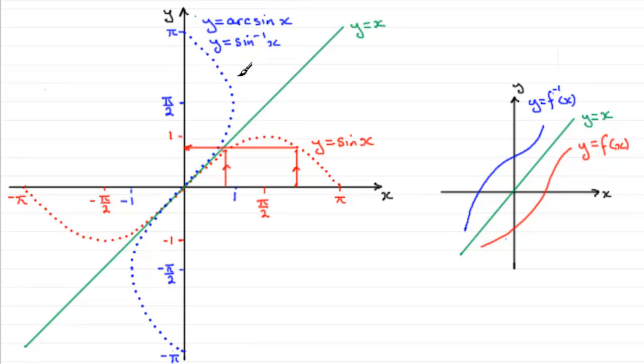But when it comes to y equals arcsin x, this isn't a function at the moment because, can you see that if I take this value of x in the domain from minus 1 to 1, I can have this value of y in the range, or I could have this value of y in the range. So we're going from one value to many values.